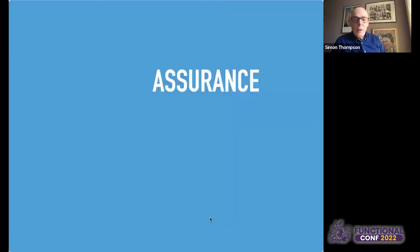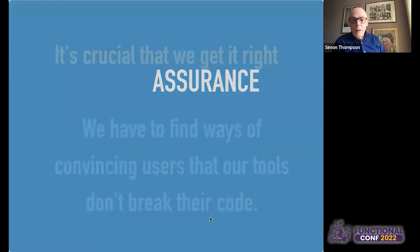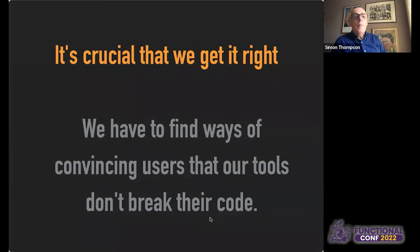So that's our requirement. How do we give people assurance that what we're doing to their code is safe? This is really quite serious. What we're doing is writing a system which says we're going to modify your code — but trust us, it will not break your system, it will not break your code. So we have to find ways of convincing users that our tools don't break their code.